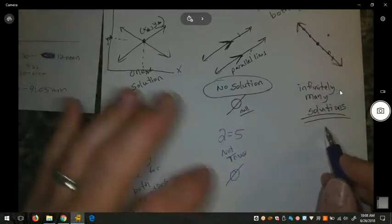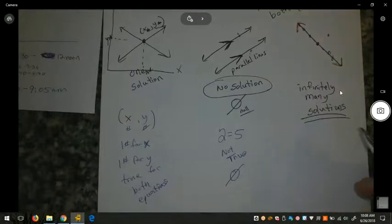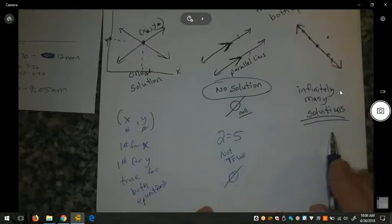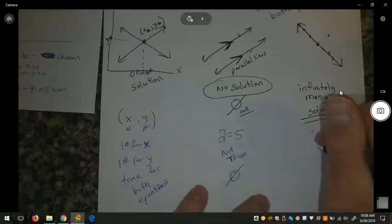In the infinitely many solutions case, again, the variables will undo each other in the solving process and you'll be left with an equation that has no variables. Except this time, instead of having two numbers that aren't equal saying that they're equal, which is untrue, you'll have something like 2 equals 2, or 5 equals 5, or 0 equals 0.